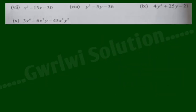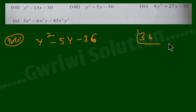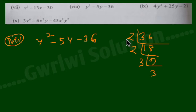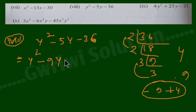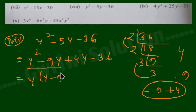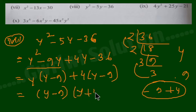The next question: the number is y squared minus 5y minus 36. Working through: y squared minus 9y plus 4y minus 36, giving us y minus 6. Then y minus 4.